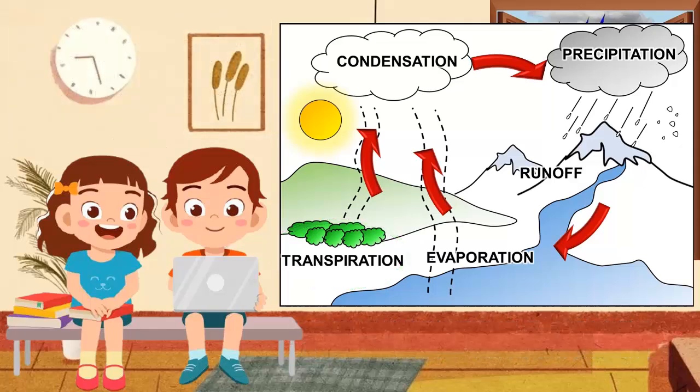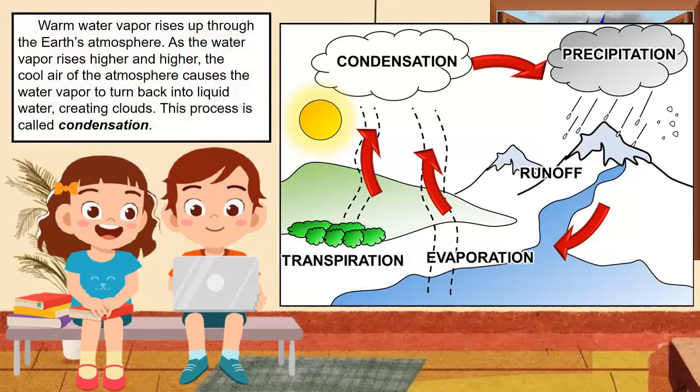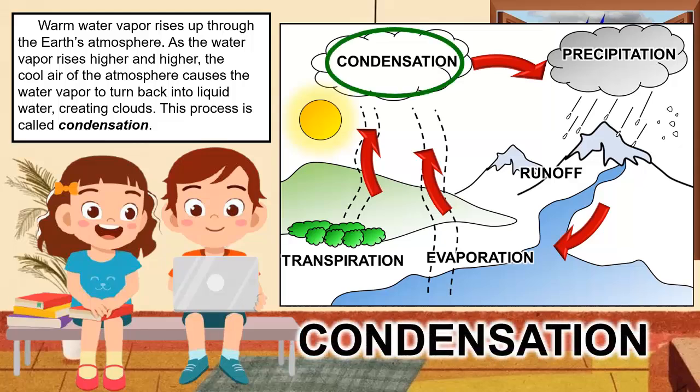Warm water vapor rises up through the earth's atmosphere. As the water vapor rises higher and higher, the cool air of the atmosphere causes the water vapor to turn back into liquid water, creating clouds. This process is called condensation.